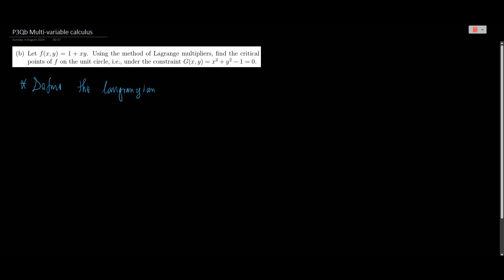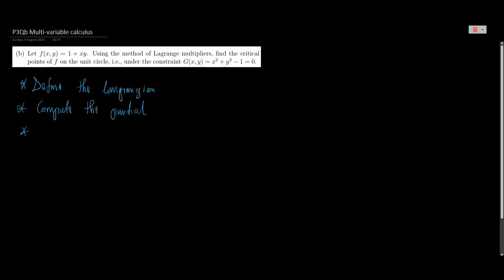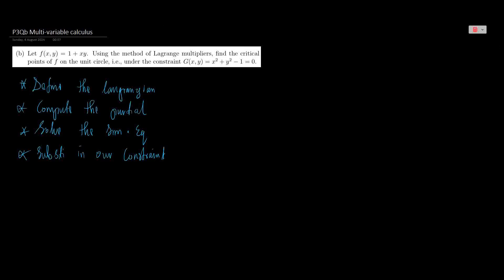There are a couple of steps we have to follow. The first thing we need to do is define our Lagrangian. From this Lagrangian we're going to compute the partial derivatives. Once we compute our partial derivatives we can then solve the simultaneous equations, and from there we simply substitute in our constraint, and those will be the critical values.